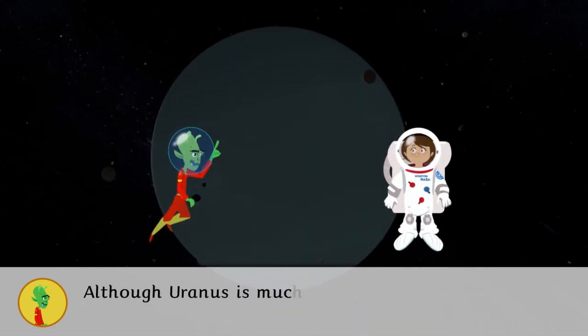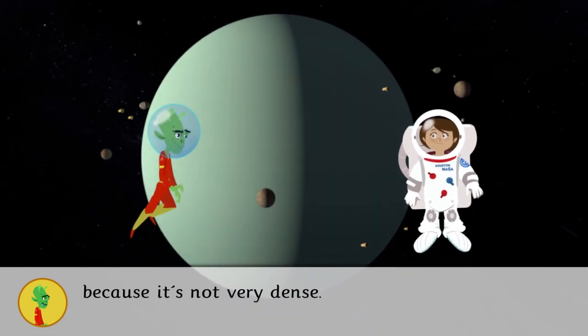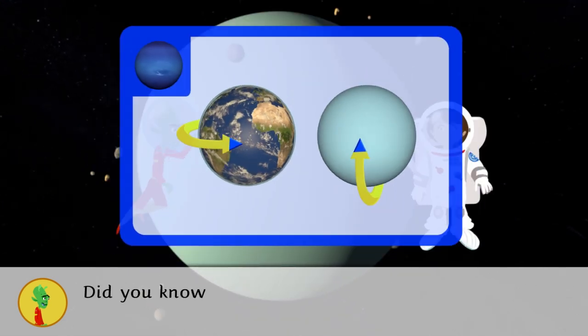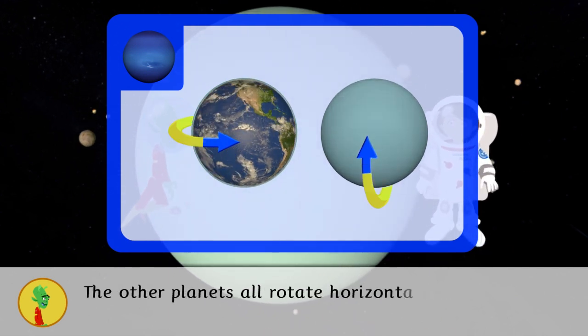Although Uranus is much bigger than Earth, its gravitational force is similar to ours because it's not very dense. Did you know that Uranus rotates vertically? The other planets all rotate horizontally.